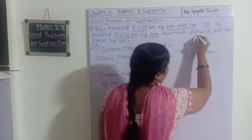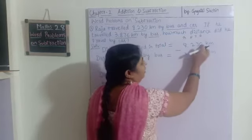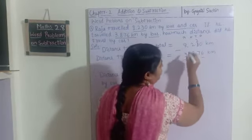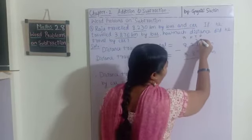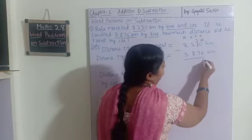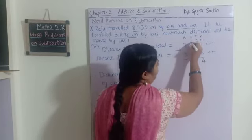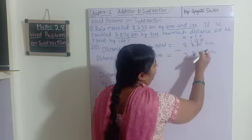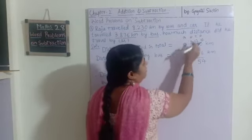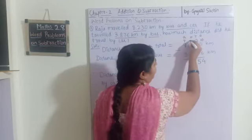This is the ones place, tens, hundreds, and thousands place. We cannot subtract six from zero, so we borrow one ten — two tens remain and it becomes ten. Ten minus six is four. Two minus seven we cannot do, so we borrow one hundred; it becomes twelve. Twelve minus seven is five. In the hundreds place, we cannot subtract eight from one, so we borrow; seven thousands remain and it becomes eleven. Eleven minus eight is three.